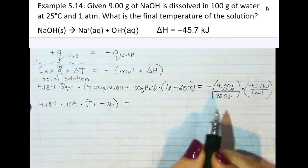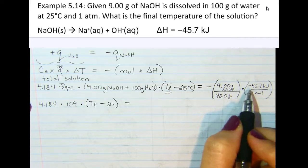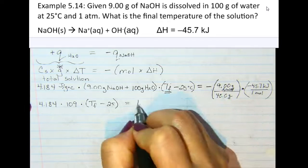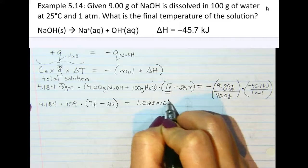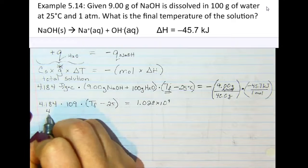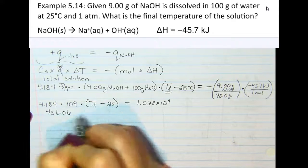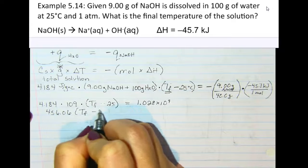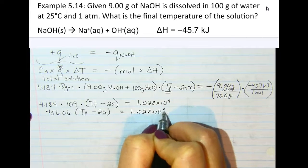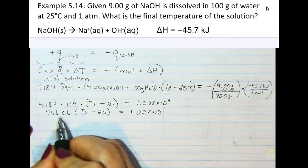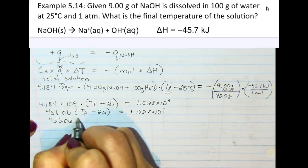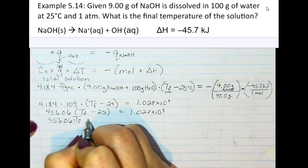And that is equal to, and when I do 9 divided by 40 times negative 45.7 times negative 1, I get 1.028 times 10 to the 4. Now I'll multiply these two values, and that will give me 456.06. That's going to be multiplied by Tf minus 25, which equals 1.028 times 10 to the 4th.